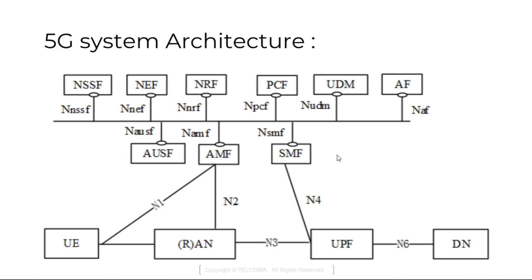UPF, the User Plane Function, is responsible for handling user data. We also have Application Functions (AF) responsible for handling various applications, DN as the external data network, and other network functions that are part of the control plane.